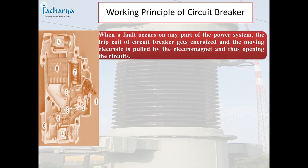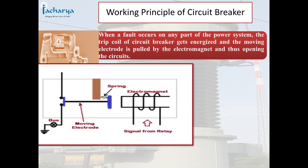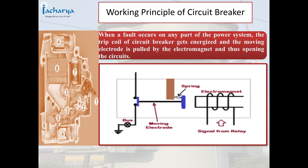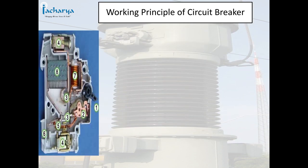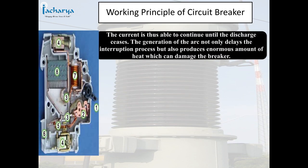When a fault occurs on any part of the power system, the trip coil of the circuit breaker gets energized and the moving electrode is pulled by the electromagnet, thus opening the circuit. The current is able to continue until the discharge ceases. The generation of the arc not only delays the interruption process but also produces an enormous amount of heat which can damage the breaker.